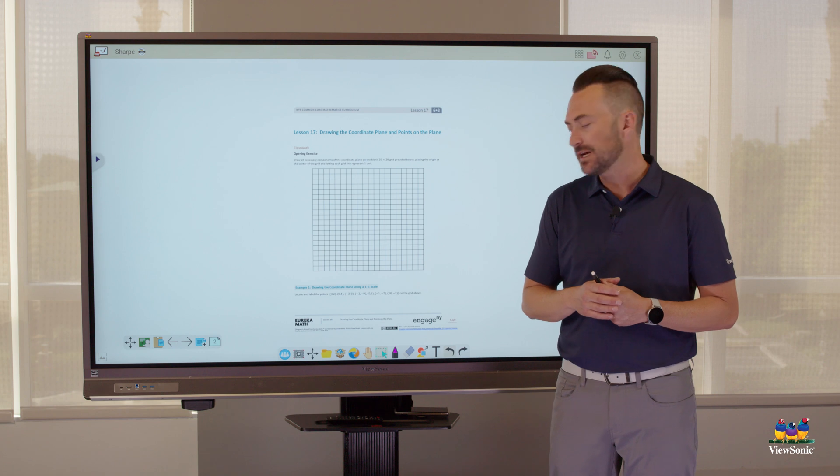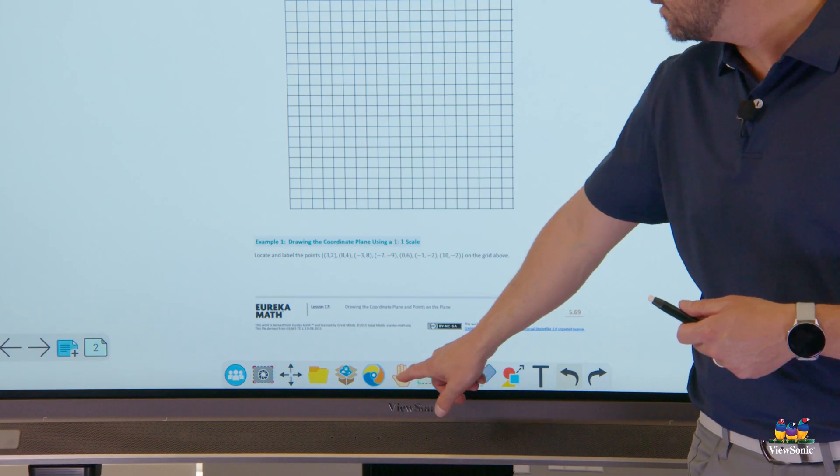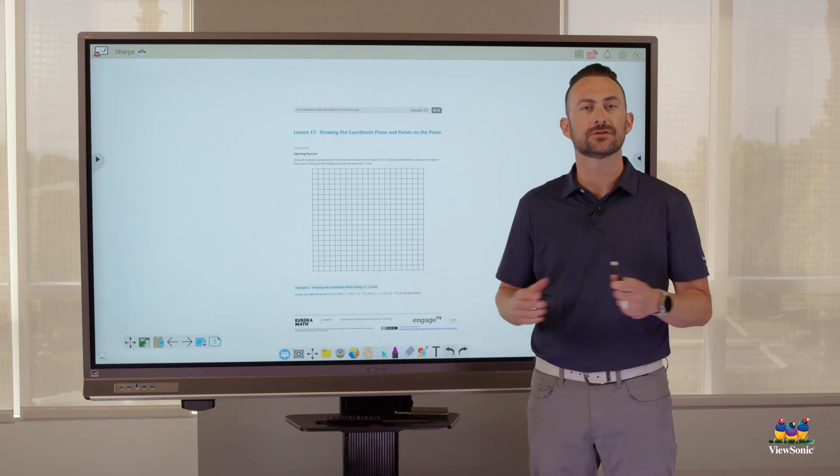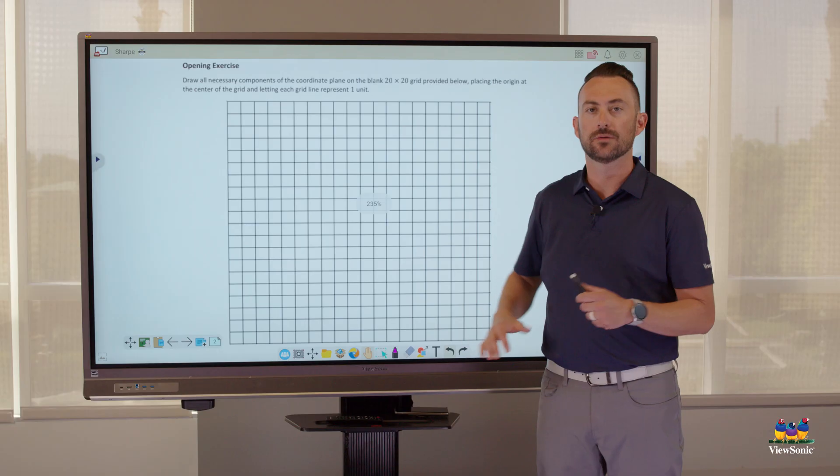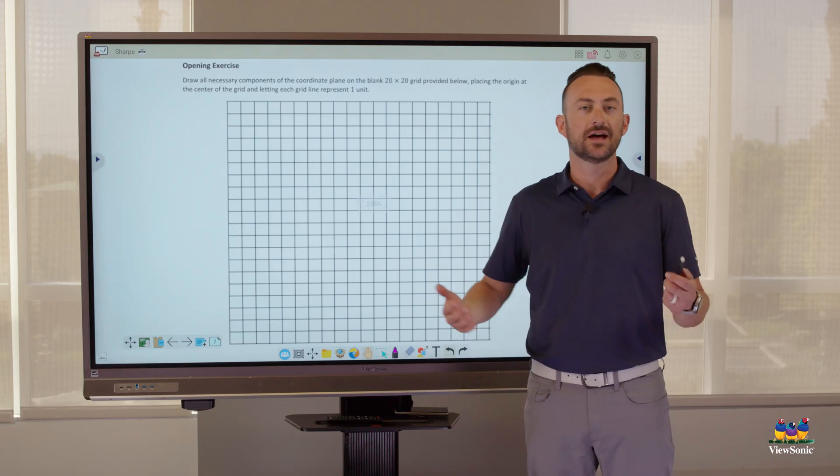As an example, on this PDF, if I want to zoom in, I can touch the hand. This activates Infinite Canvas. Then I can zoom in or out on my problem. And if I'm annotating, everything sticks.